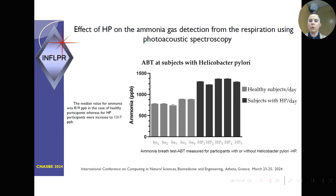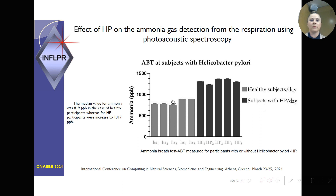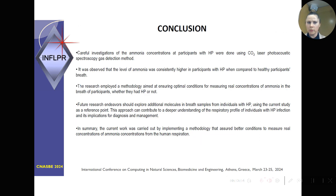Here I have the results. On the right part I have the results for the ammonia concentration for subjects with Helicobacter pylori, while on the left part I have the results for healthy subjects. You can observe that from the median value for ammonia, the concentration for Helicobacter pylori subjects was increased to 1300 ppb, whereas for healthy volunteers it was around 800 ppb. In conclusion, careful investigation of ammonia concentration in participants with Helicobacter pylori was done using CO2 laser photoacoustic spectroscopy gas detection method.